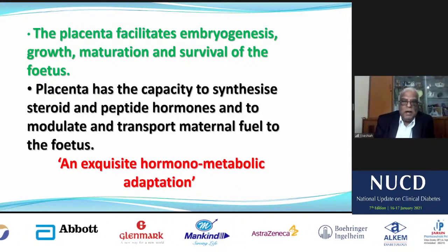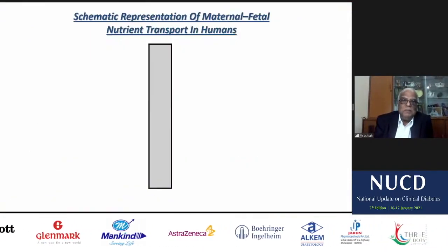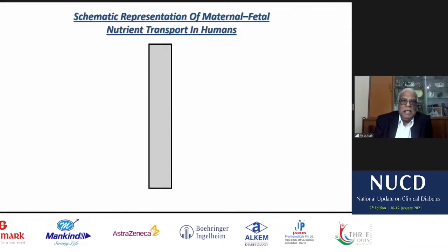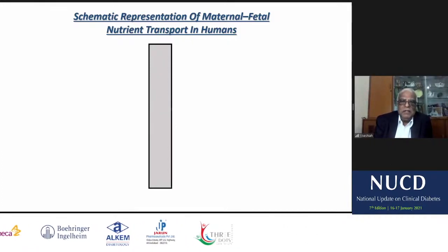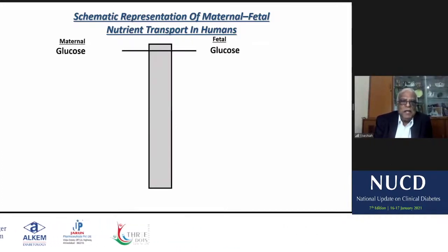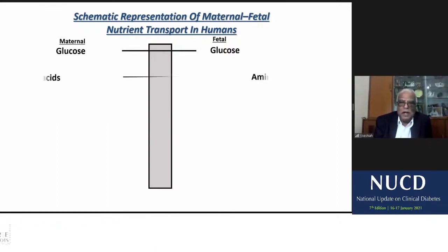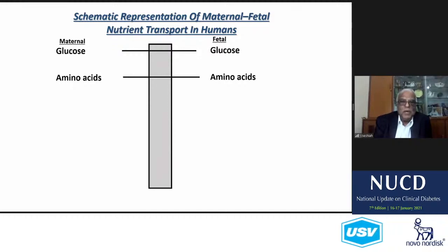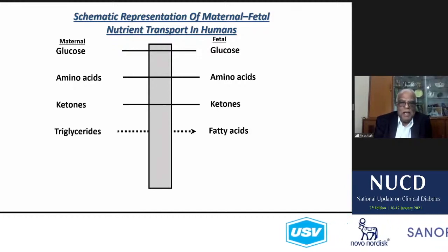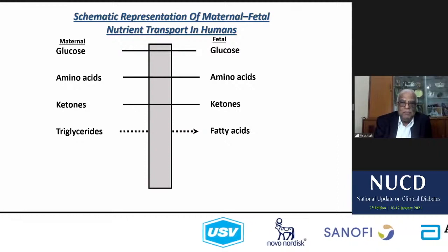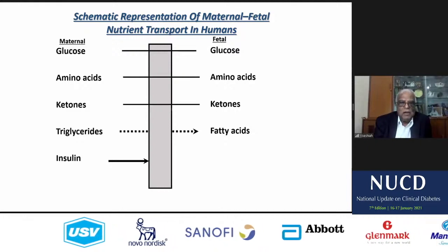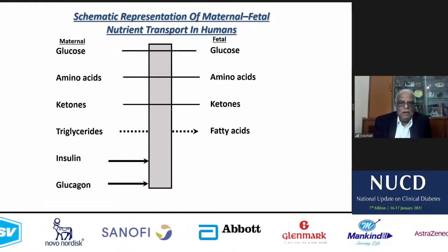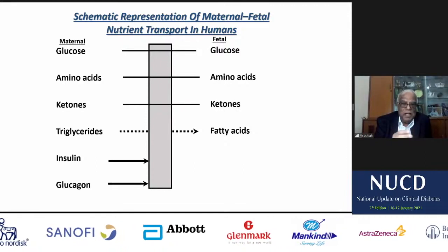The explicit hormonometabolic adaptations: maternal glucose from the mother goes easily to the fetus through the placenta. Amino acids can also transfer from mother to fetus, and also ketones. Triglycerides also a little bit, but not from fetus to mother. And insulin definitely will not cross, and glucagon will not cross. So these metabolic fuels cross, but not these hormones.